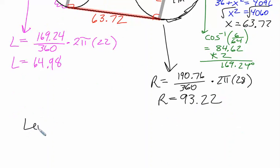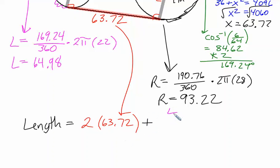So then when we want the overall length of our belt, the length of our belt is going to be two of those segments in red, which we see is 63.72. Again, I kept all the decimals on my calculator. Plus, it's going to be that left-hand side amount, which was 64.98. Plus, it's going to be the right-hand side amount, which was 93.22.